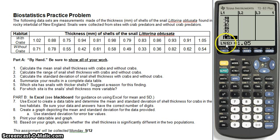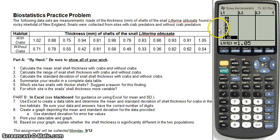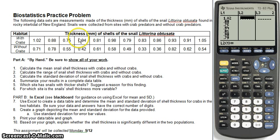To make sure I've got my 12 data points — it tells me here L1, entry 12 — so we've got all of list 1, which is the thickness of shells with crabs. Now I'm going to go ahead and enter in the shell thickness without crabs into list 2. Go ahead and do that and I'll catch up with you.